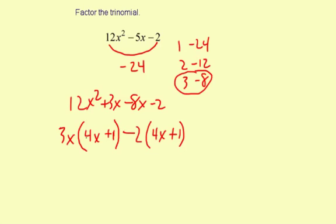Notice that there is a common term here. There's a 4x + 1 and a 4x + 1. So now we're going to do what's called the grouping part. This 3x and this negative 2, since they're both multiplied by 4x + 1, they can be combined together. So it's 3x - 2 and then times 4x + 1. Now this is completely factored.